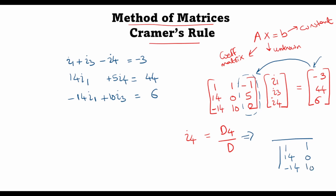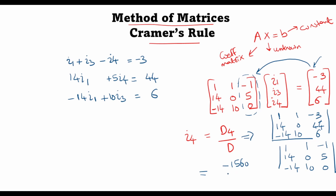The determinant D uses the coefficient matrix: first column 1, 14, minus 14; second column 1, 0, 10; third column minus 1, 5, 0. For D4, the first two columns remain the same and the last column is replaced by minus 3, 44, 6. Computing these determinants gives minus 1560 divided by minus 280, which equals 6 amperes. You can see how much simpler the problem becomes when we use the method of matrices to solve networks. Substitution in this case would have been quite cumbersome.